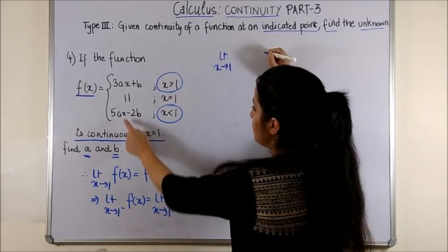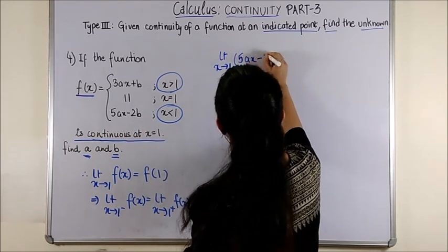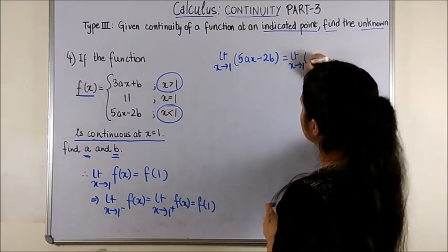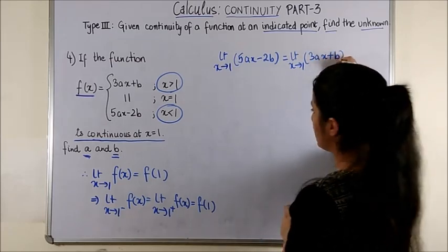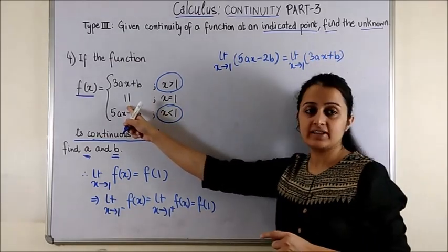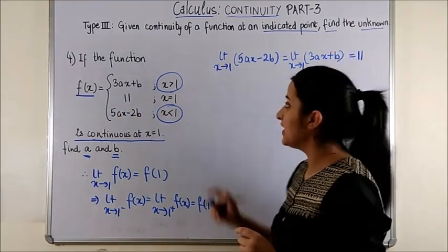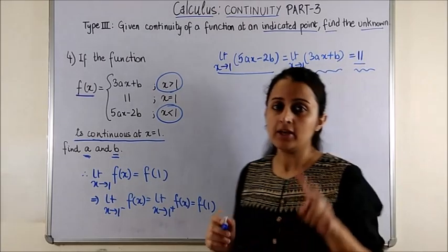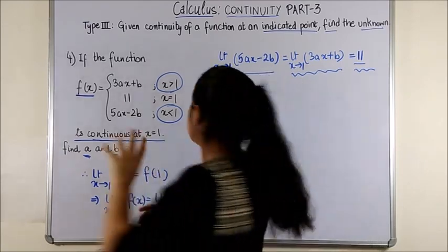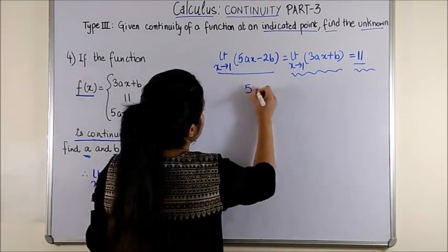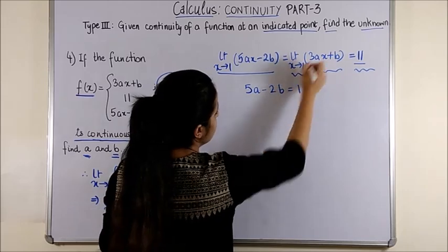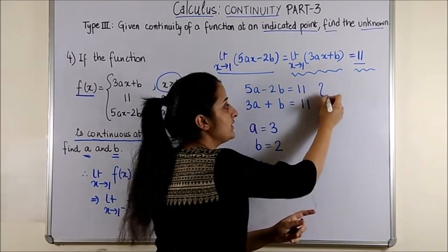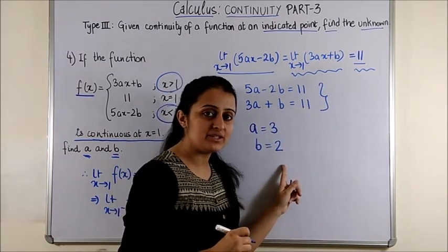So for left hand limit this is the answer 5ax minus 2b. For the right hand limit this is what the function is. And finally f of 1 is given to be 11. So we are going to take that means LHL equal to 11 and in the next case RHL equal to 11 to get two equations. So on substituting we get 5a minus 2b is equal to 11. Another equation would be 3a plus b equal to 11. Now on solving these two equations you get a is 3 and b is 2.